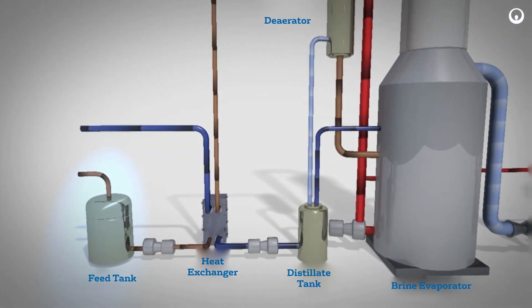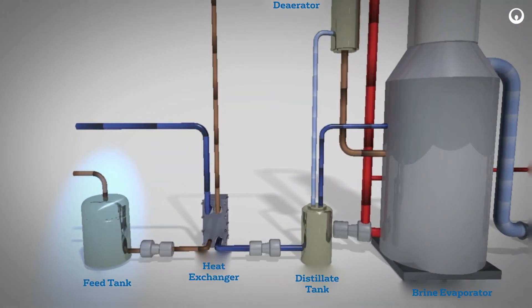Feed wastewater is transferred from a wastewater pond or tank and is pumped into a feed tank. Here in the feed tank, the pH is adjusted for deaeration or decarbonation.